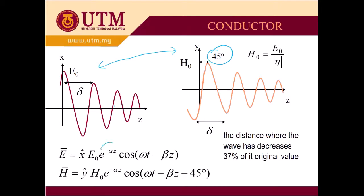we have exponent minus alpha z because we have very high losses in conductor. And then we have the function cos omega t minus beta z, this is the propagation direction. For the H field similarly, we have these lossy components and the component is y and the same direction of propagation. Here we have the phase delay of 45 degrees.